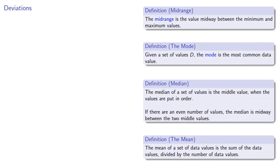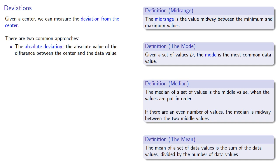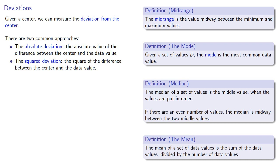This brings up a new problem. Given a center, we can measure the deviation from the center — how far the data values are from whatever center we pick. There are two common approaches. First, we can find the absolute deviation, the absolute value of the difference between the center and the data value, and the squared deviation, the square of the difference between the center and the data value.